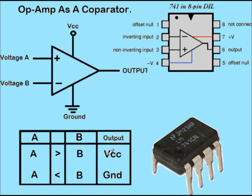The table shows that if A is greater than B, the output will be VCC. So if A is 5 volts and B is 4 volts, and you have given 9 volts as VCC, the output would be 9 volts. And if A is less than B, the output would be ground — that is, zero volts.